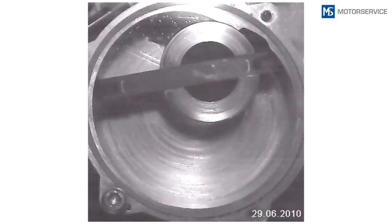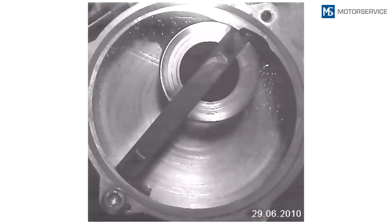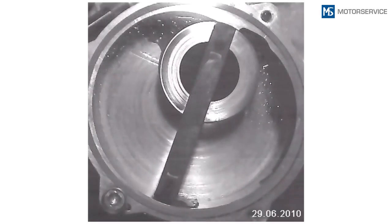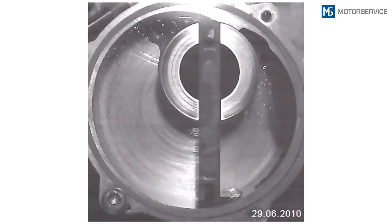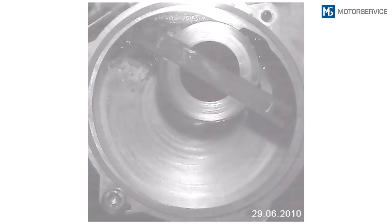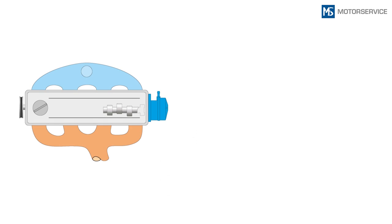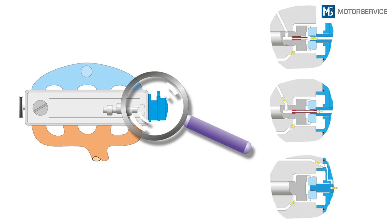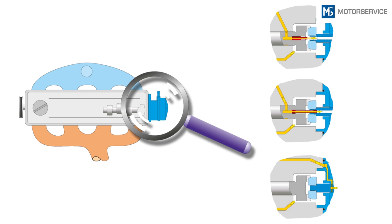Vacuum pumps require lubricating oil for internal sealing, for dissipating heat and for lubrication. Oil is frequently supplied through ducts in the cylinder head or the camshaft. The oil is fed back into the engine along with the exhaust air.